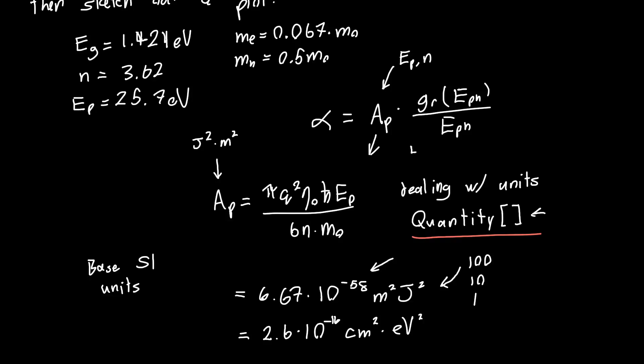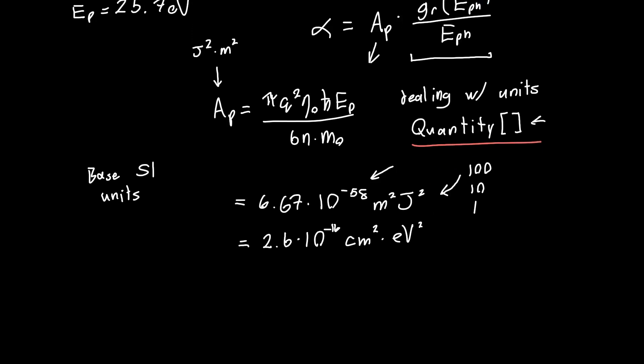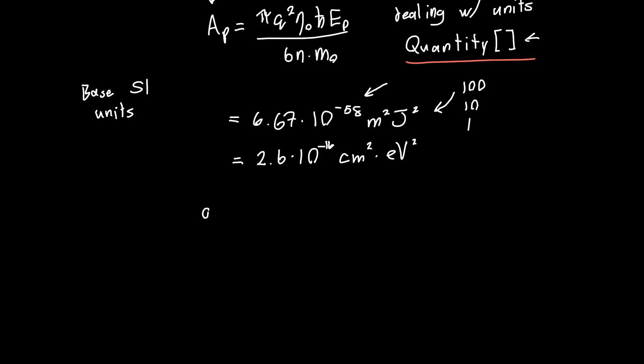And so now to calculate this term on the right hand side, all we need to do is plug in e-photon is just equal to our band gap plus 0.1 electron volts. And so if you do that, and you evaluate the reduced density of states, first of all the reduced mass, the reduced mass you should calculate to be about 0.059 times the free electron mass, and that's just using the definition of the reduced mass. It's just 1 over the electron mass plus 1 over the hole mass, the inverse of that.